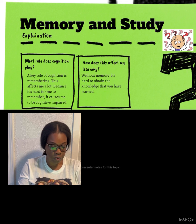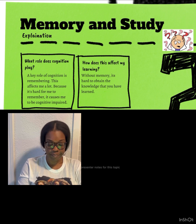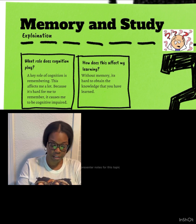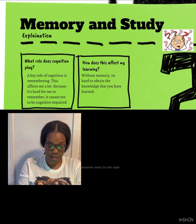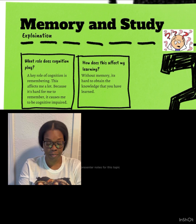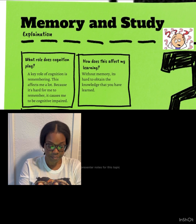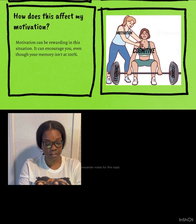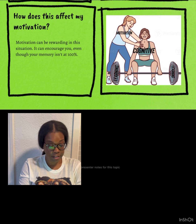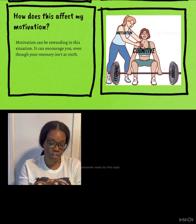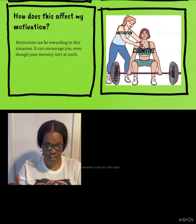I'm going to explain the topics. What role does cognition play? A key role of cognition is remembering. This affects me a lot because it's hard for me to remember — it causes me to be cognitively impaired. Without memory it's hard to obtain the knowledge that you have learned. Motivation can be rewarding in this situation; it can encourage you even though your memory is not 100%. On the visual, that represents cognitive, motivation, and learning.